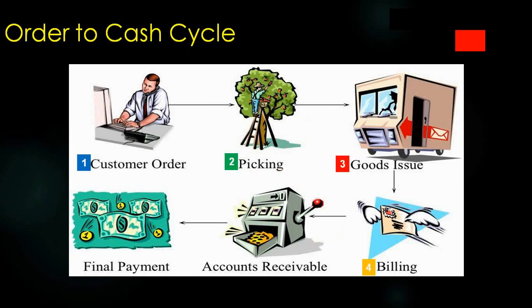The fourth step is billing. Once we've sent the goods to the customer, we send them a bill or invoice. Our accounts receivable department will follow up with the customer, and finally the customer will pay their dues and we receive the money. That's a typical sales order cycle, and in the next videos I'll cover each step in detail with practicals.